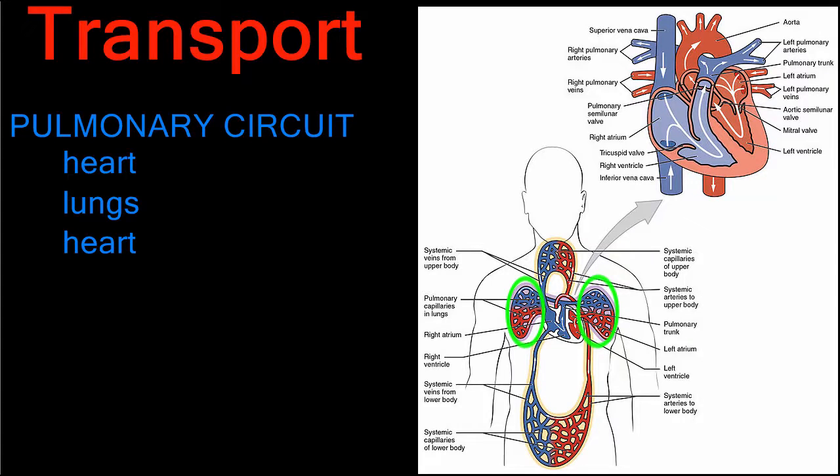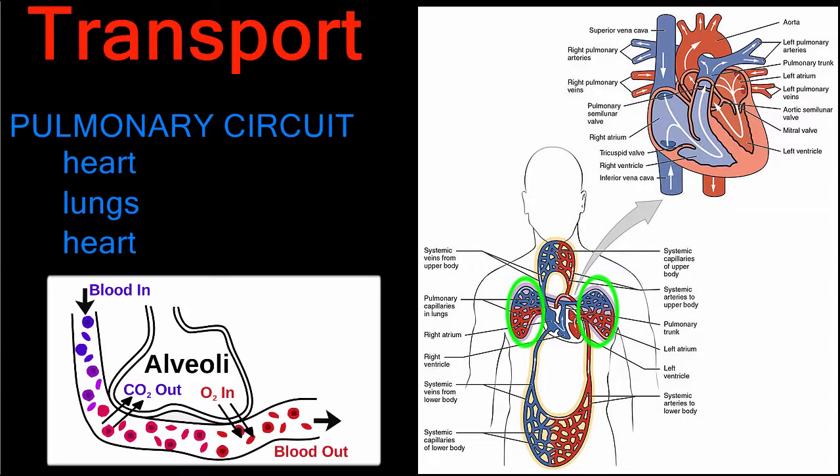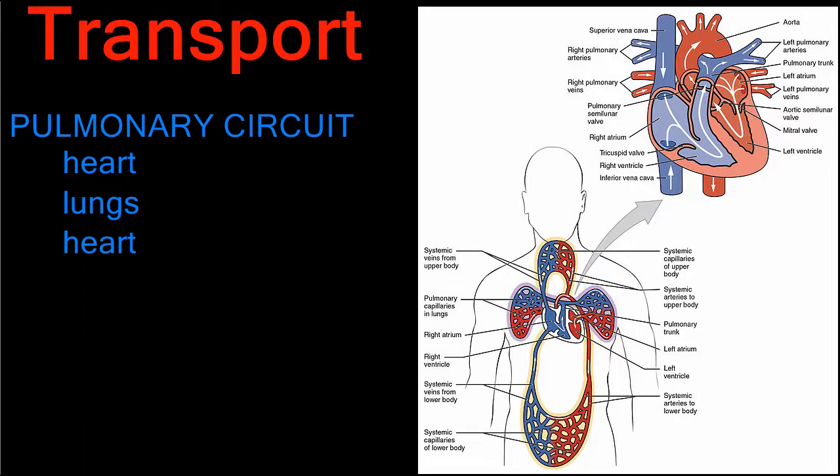In the capillaries, oxygen is able to diffuse into the blood from the air, while carbon dioxide diffuses out. The oxygen-rich blood then travels through venules and finally the pulmonary vein back to the heart where it enters the left atrium.